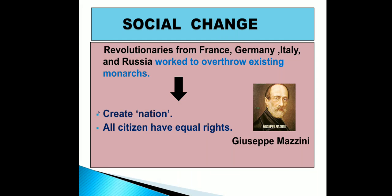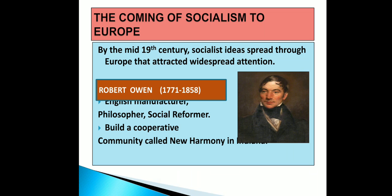Now we will discuss about the coming of socialism to Europe — page number 28, third point. By the mid-19th century, socialist ideas spread through Europe and attracted attention of Europeans. Socialists were against private property and claimed that it was the root of all social problems. The solution they proposed was that instead of an individual, property should be controlled by the society. Socialists wanted this change.